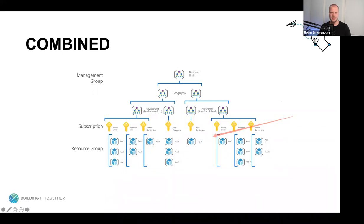One combined example adds geography on top — so you have a business unit, two locations, and then production and non-production subscriptions with resource groups underneath. A good thing to keep in mind is that the management group hierarchy can be six levels deep, so take that into account when designing your management group hierarchy.